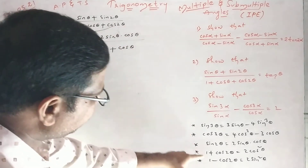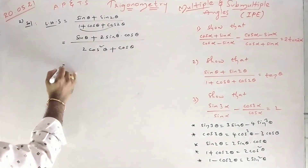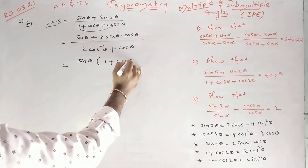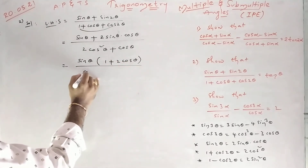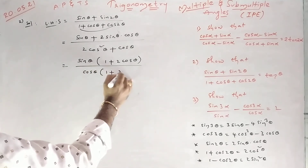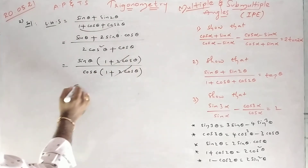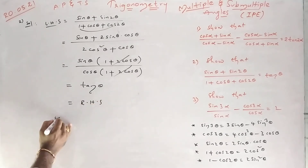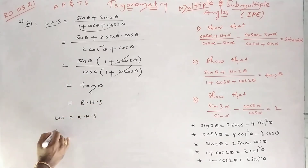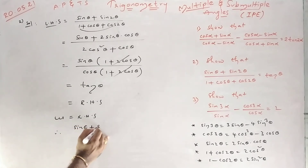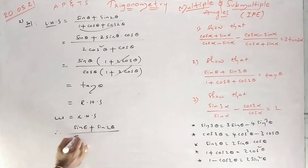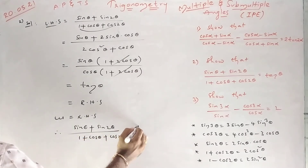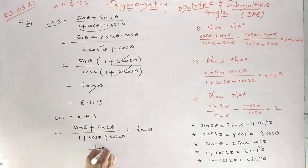In the numerator, take sinθ common, so 1 + 2cosθ remains. In the denominator, take cosθ(1 + cosθ) common — 1 + 2cosθ. This cancels out. sinθ over cosθ is tanθ — that is RHS. LHS equals RHS. Therefore, (sinθ + sin2θ)/(1 + cosθ + cos2θ) equals tanθ. Hence proved.